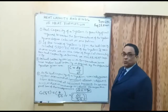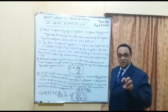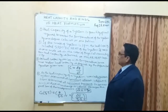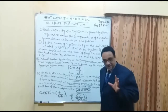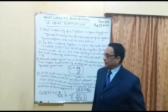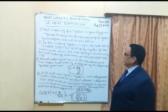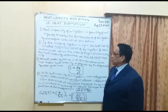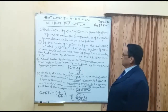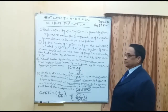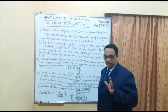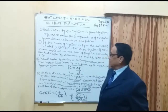Number two: if the mass of the system is one gram, the heat capacity is called specific heat. Once we say specific heat, it means the system mass is taken in grams. If mass is one mole — as in physical chemistry — then that heat capacity is termed molar heat capacity.